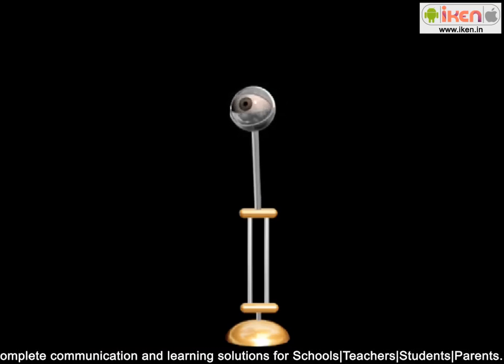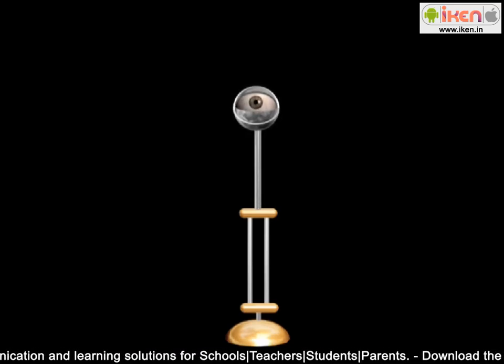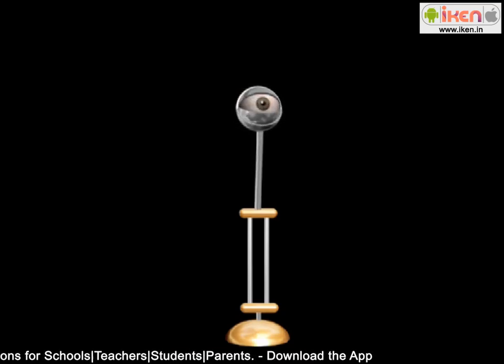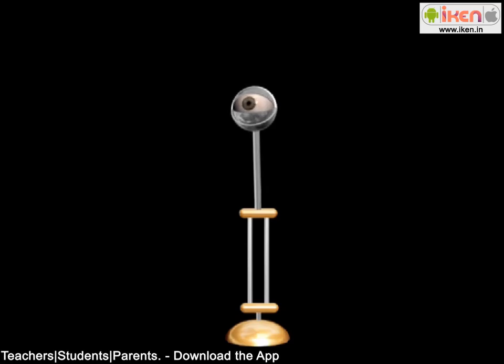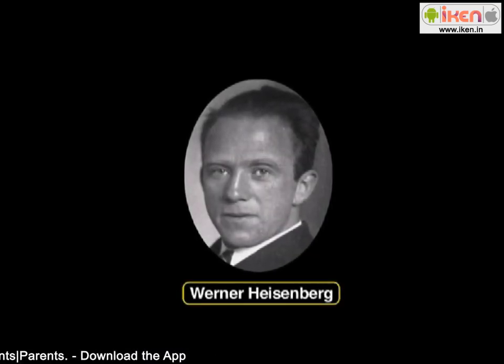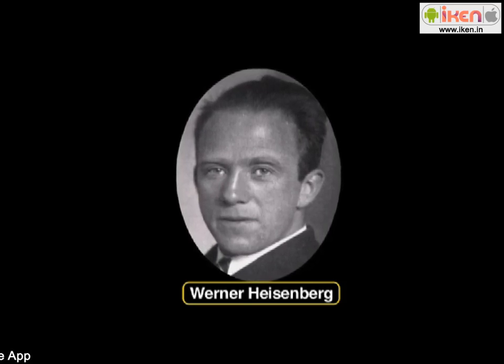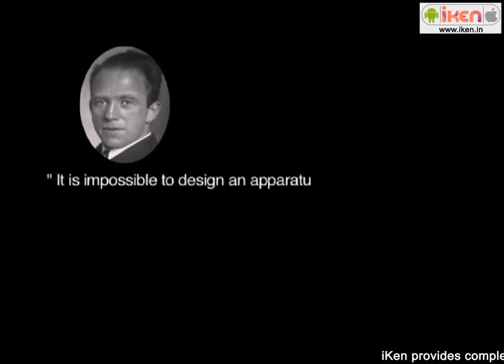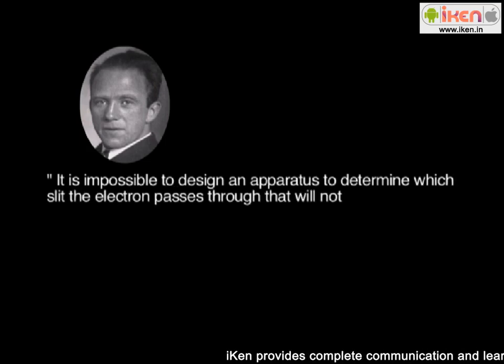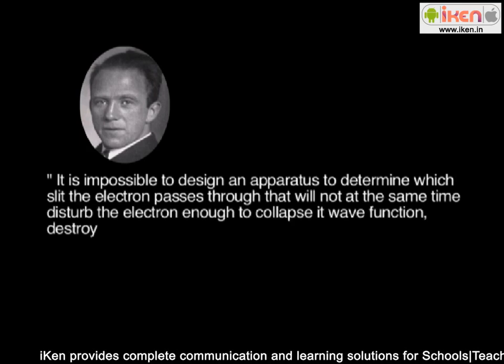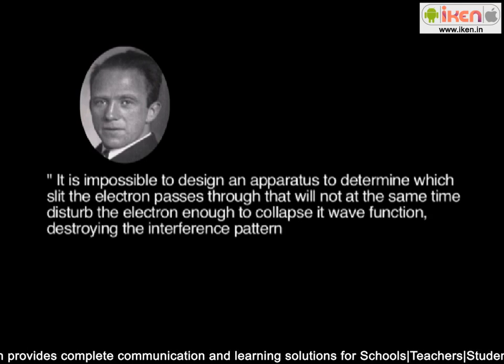However, physicists eventually realized that any type of measuring device, no matter how small, always interacted with the electron, subsequently destroying the interference pattern. Werner Heisenberg proposed the uncertainty principle describing this. The uncertainty principle can be stated as follows: It is impossible to design an apparatus to determine which slit the electron passes through that will not at the same time disturb the electron enough to collapse its wave function, destroying the interference pattern.